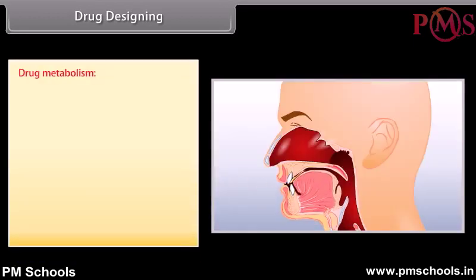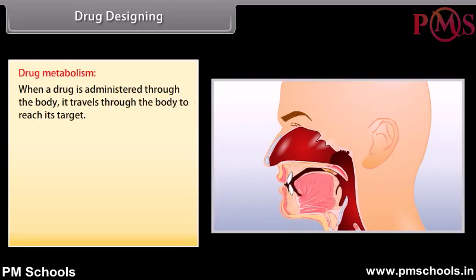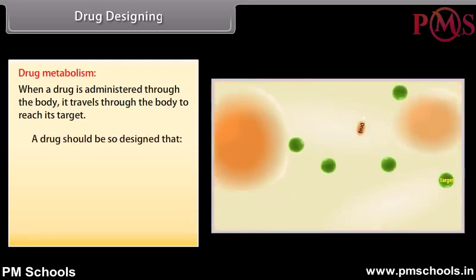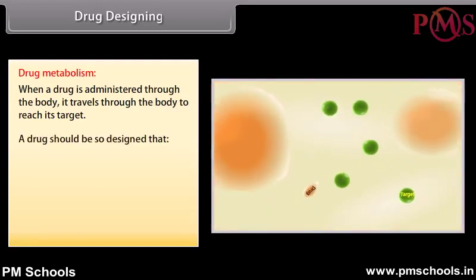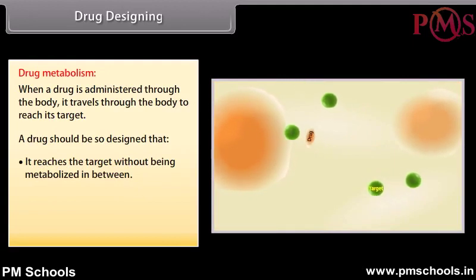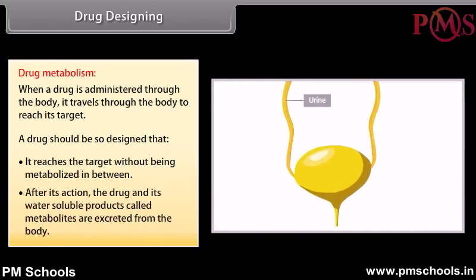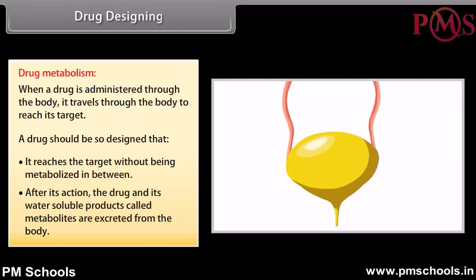Drug metabolism: When a drug is administered into the body, it travels through the body to reach its target. A drug should be designed so that it reaches the target without being metabolized in between. Also, the drug should be designed so that after its action, the drug and its water-soluble products called metabolites are excreted through urine, feces, exhaled air, saliva, and sweat without causing harm to the body.